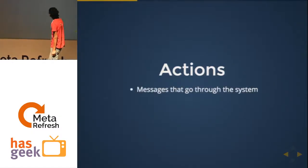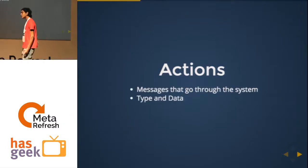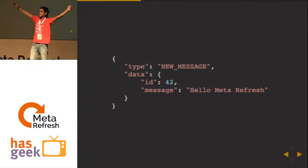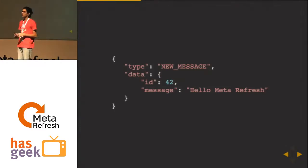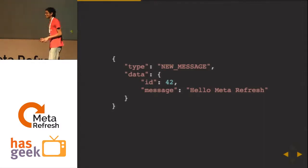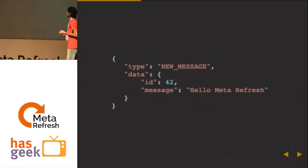First, actions. Actions are the messages that go through the system — they all have a type and a data payload. For example, a simple action might say hello with some payload and a type of 'new message'. The type is a simple string. Every action contains a type and a payload — the type is the only required bit, the payload is optional and can be anything.